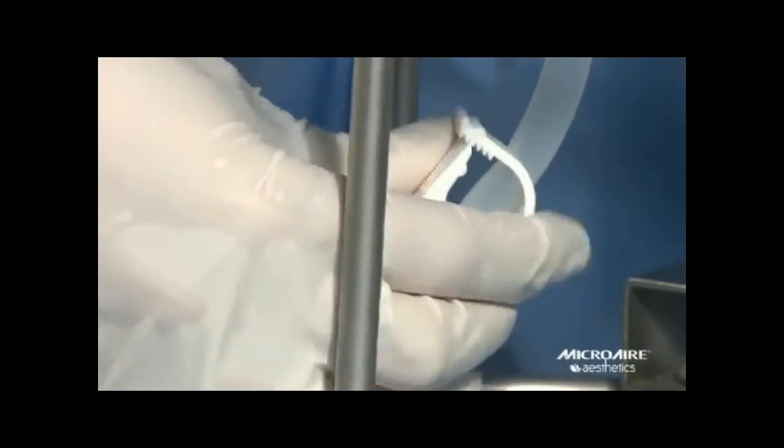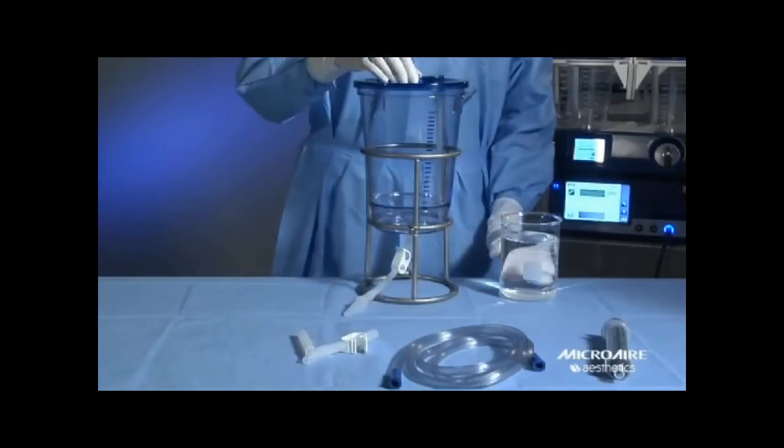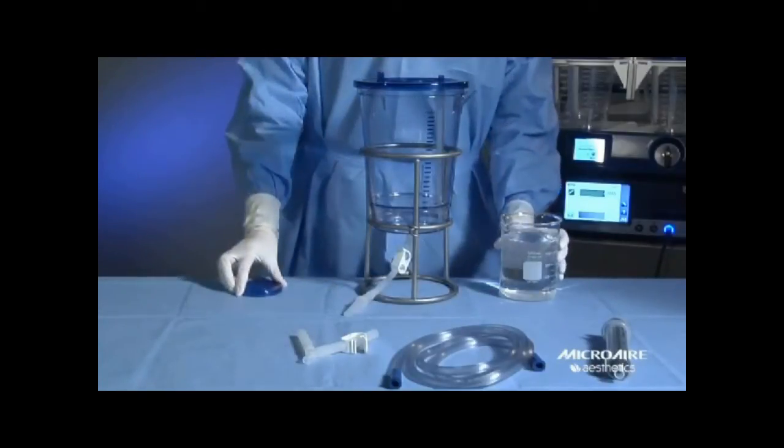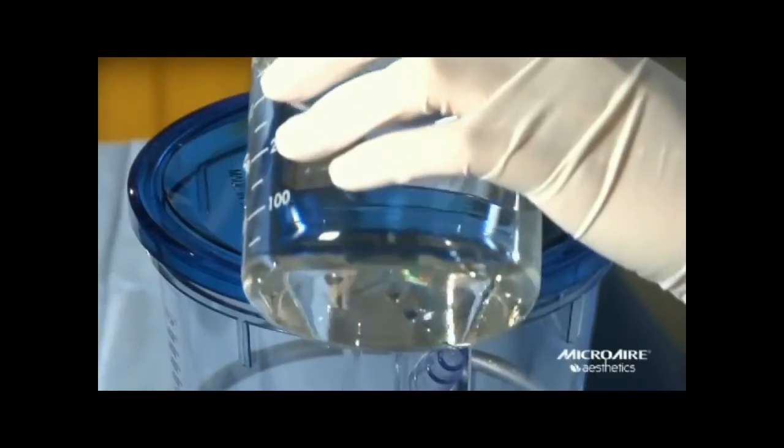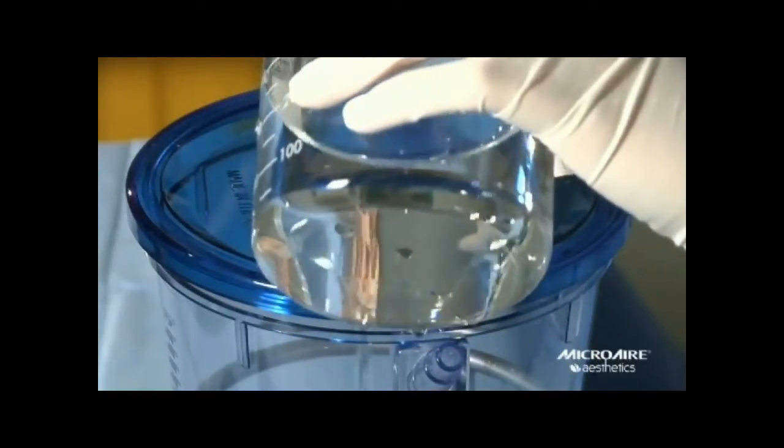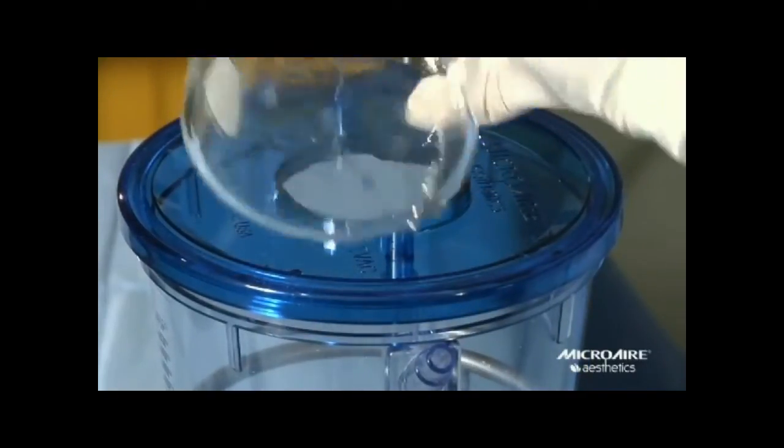Preload the canister with a minimum of 500 cc's of sterile saline or lactated ringers. We recommend 700 to 800 but never less than 500 cc's. This cushions the fat coming in and gives it a nice wash. Do not use sterile water as this will damage your fat cells.